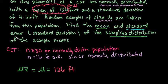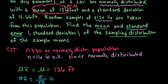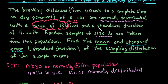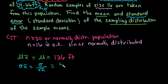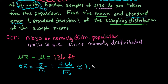If it asks you to find the standard error, or the standard deviation of the sampling distribution of the sample mean, remember that it equals the population standard deviation divided by the square root of n. In this case, the standard deviation is 4.66 feet — that's our sigma. Plugging in: 4.66 divided by the square root of 16 gives us 1.165 feet as our standard error.